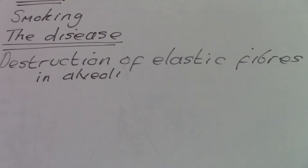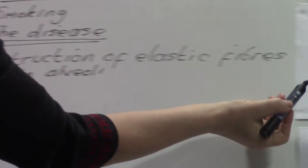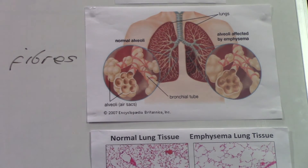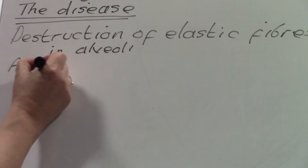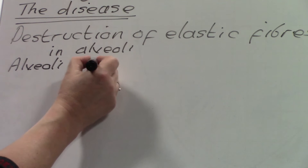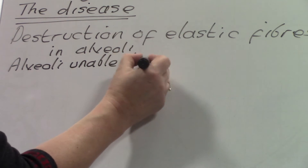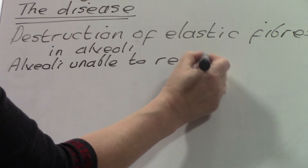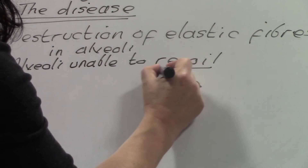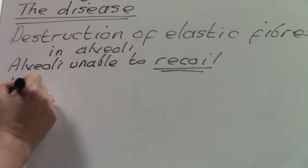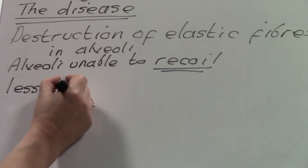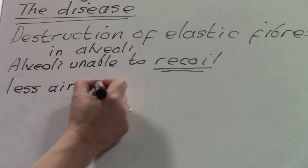This means that the alveoli lose their ability to recoil — spring back into shape when you breathe out. So alveoli are unable to recoil; 'recoil' is a very good word to use in exams. Because the alveoli can't recoil, this means that less air is expelled from the lungs when we breathe out.